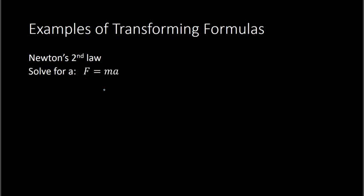To do this, we follow the same procedures as we would for solving an equation. We want to solve for a, meaning we want to get everything away from a. The mass is being multiplied by a, so I need to get rid of it by doing the opposite, which is dividing. I divide both sides by m, which is the mass. When I do that, on the right side the m's will cancel, and I'm left with a on the right side. So I have f over m equals a.